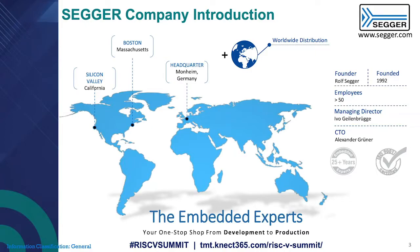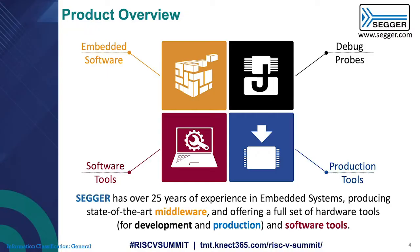Just a really quick one-minute introduction of Segger. We do development tools and embedded software for all kinds of targets. Our headquarters are in Germany, but we have offices on the East Coast in the Boston area as well as here in Silicon Valley, and we have a worldwide distribution network. There are mainly four product groups that we manufacture and support.